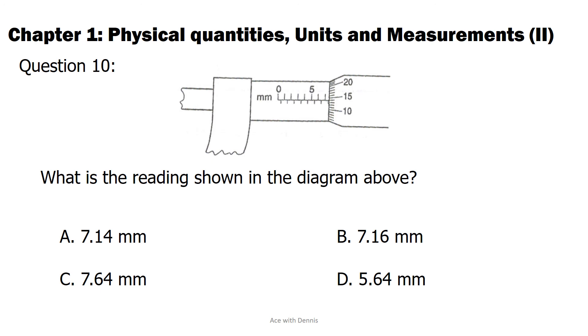The answer is C. 7.64 mm. The reading on the main scale is 7.5 mm. The reading on the thimble scale is 0.14 mm. Hence the reading is 7.5 mm plus 0.14 mm, which is 7.64 mm.